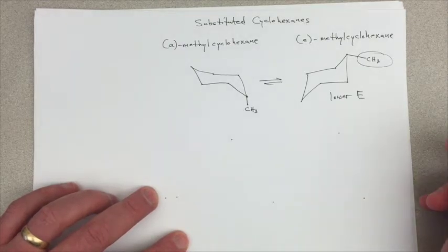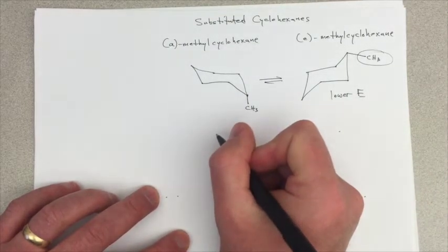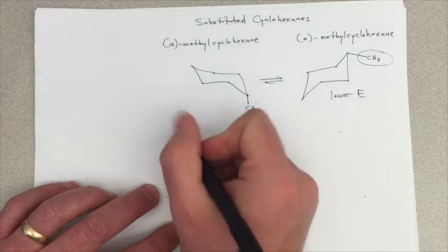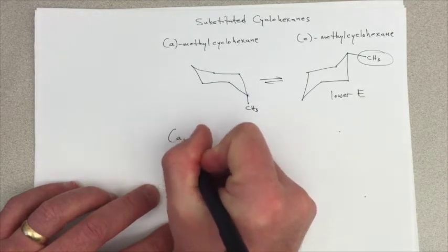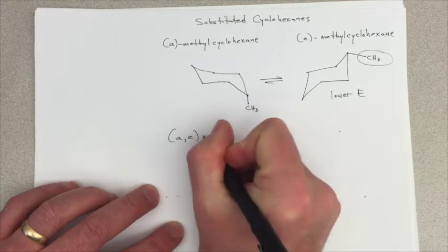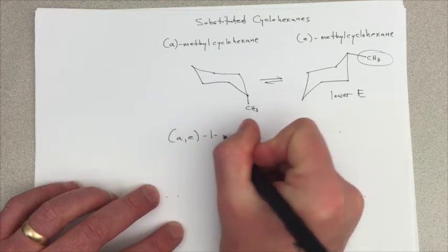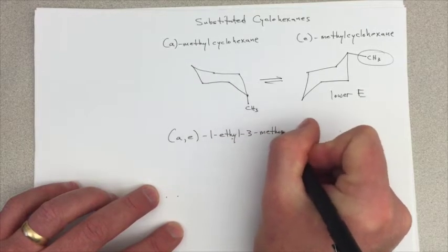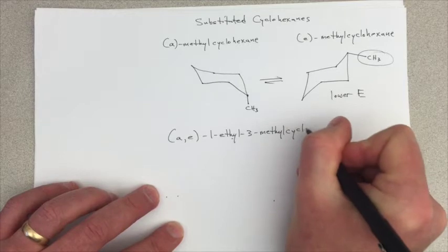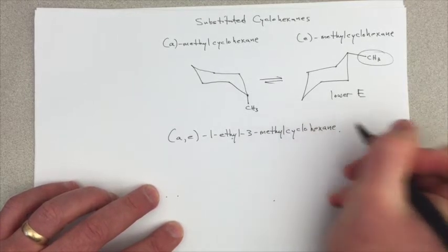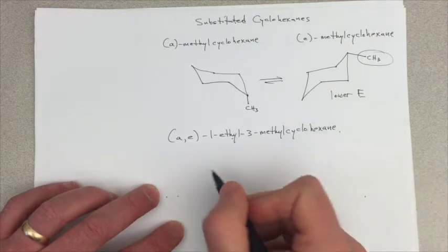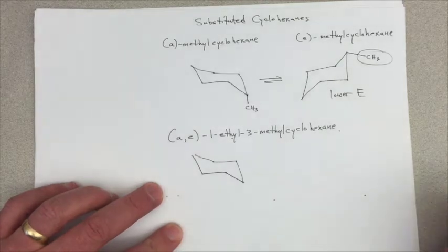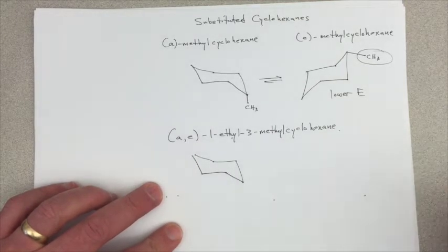Okay. Now let's start thinking about disubstituted cyclohexanes. Things get a little more complicated. So let's try something like this. Axial, equatorial, 1-ethyl, 3-methylcyclohexane. When asked to, well given a molecule like this, the first thing to try is draw any version of it possible and then try to decide if you've drawn the lowest energy version or if a ring flip would be beneficial.